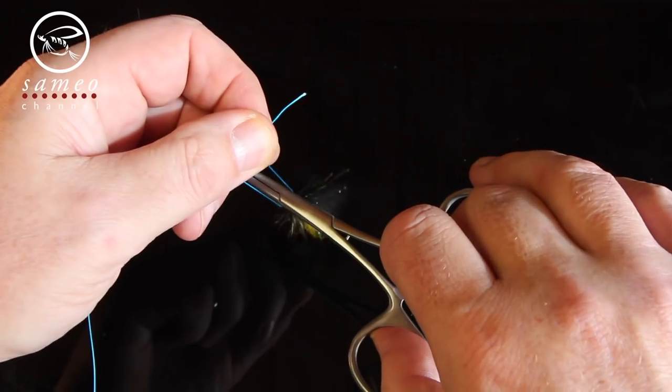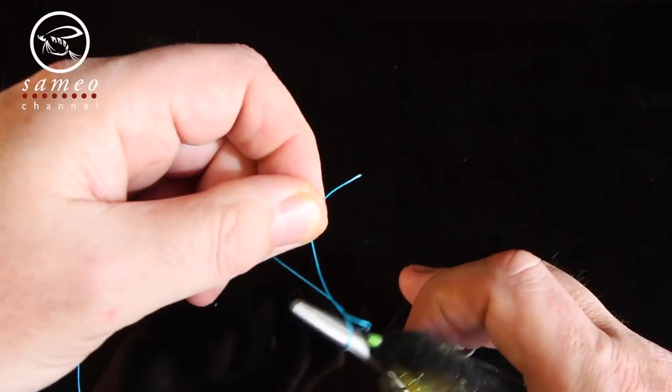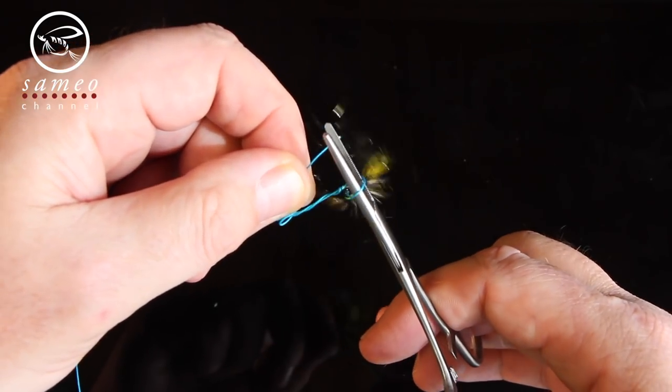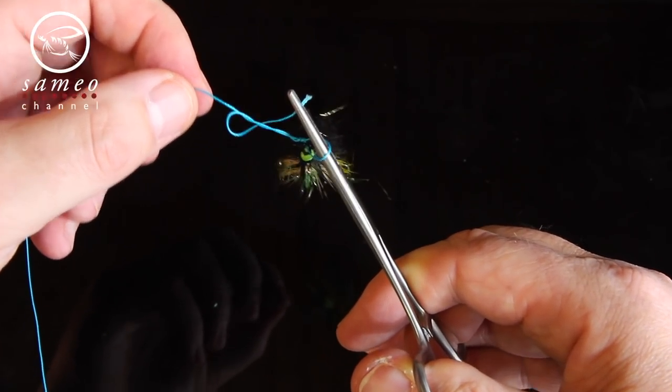Now you put the forceps through the loop and turn it around five, six times. You open the forceps and fetch the loose end. Pull it back through the loop.